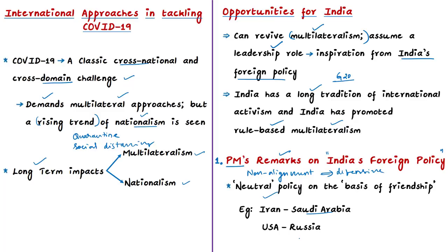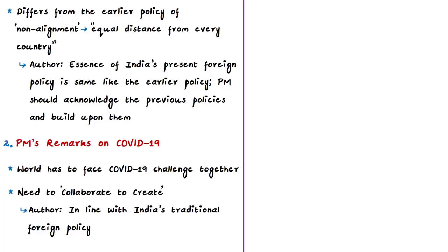However, the author is against this logic of the Prime Minister. He tells that the essence of the present foreign policy is one and the same as before. The author's logic is that even during the Non-Alignment Movement, India maintained friendly relations while safeguarding its interests effectively when they were threatened. So the author tells the Prime Minister should acknowledge the previous policies and build upon them instead of trying to be different.